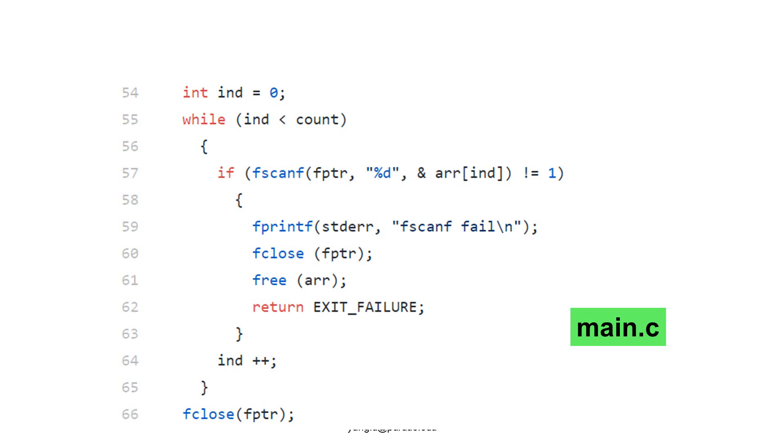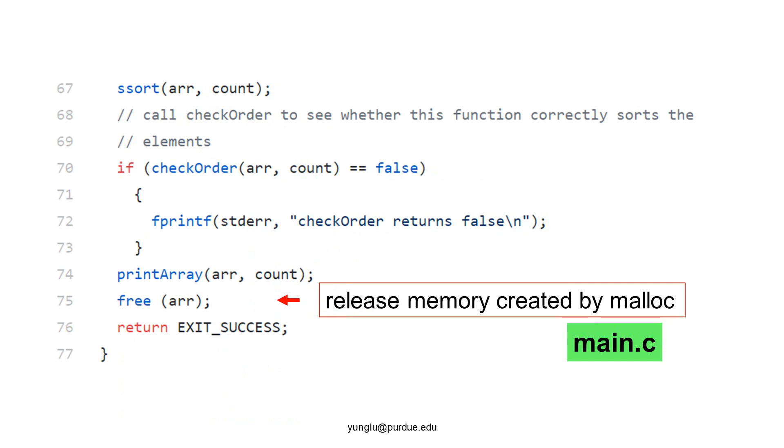At the moment, the program has all the integers from the file and is ready to call the selection sort function in line 67. Line 70 checks whether the array's elements are sorted in ascending order.